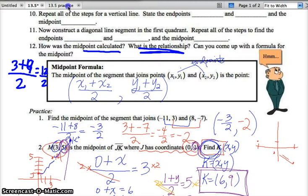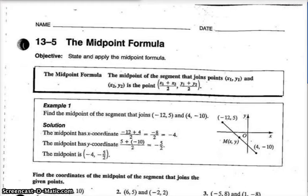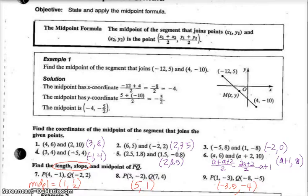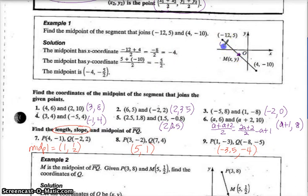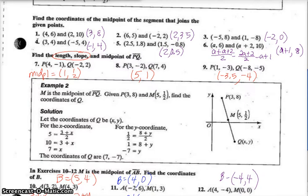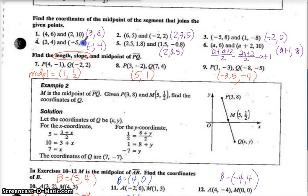To continue, I have some practice on the back. Go ahead and pause and try these, then check your answers when you're done. So here's a review of the midpoint formula: you take the average of the x's divided by 2, average of the y's divided by 2. Here's an example — this is the midpoint, which means this segment is congruent to this segment. You should have gotten: number 1 — 4 plus 2 is 6 divided by 2 is 3, and 16 divided by 2 is 8. Number 2 — 4 divided by 2 is 2, and 7 divided by 2 is 3.5. Number 3 — negative 4 divided by 2 is negative 2, and 8 plus negative 8 divided by 2 is 0.